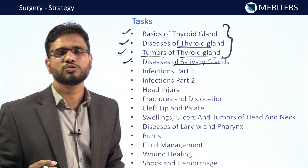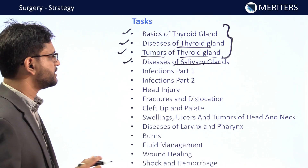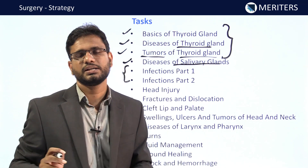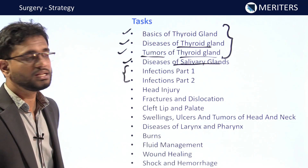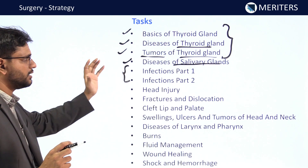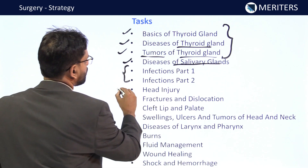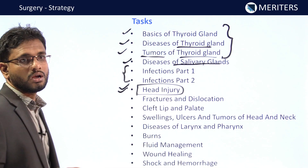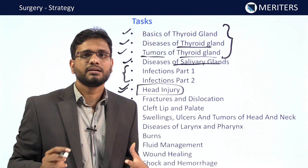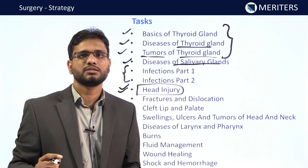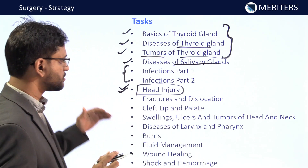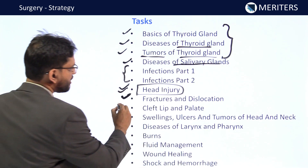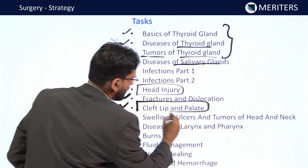Next are surgical infections: tetanus, carbuncle, boil — these are specific to surgery. Then one of the most important topics is head injury — the protocols to be followed, what is triage, and the Glasgow Coma Scale. All these questions come from head injury in surgery.